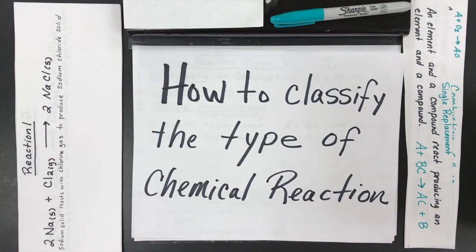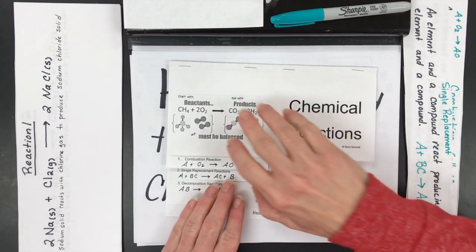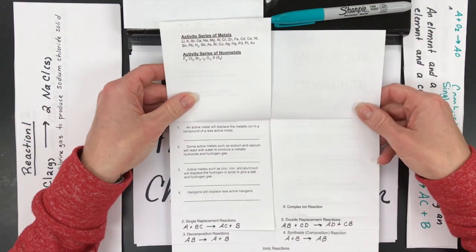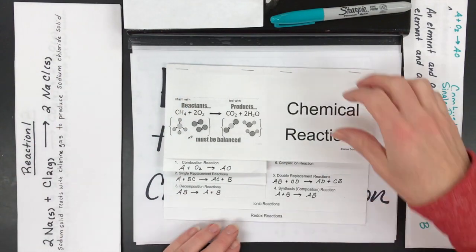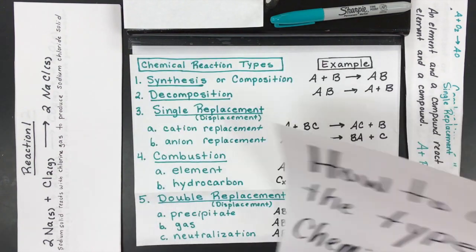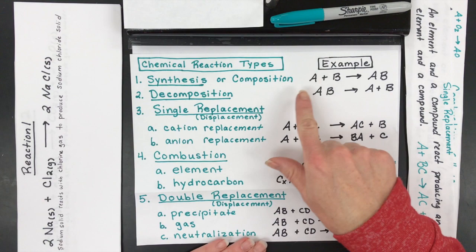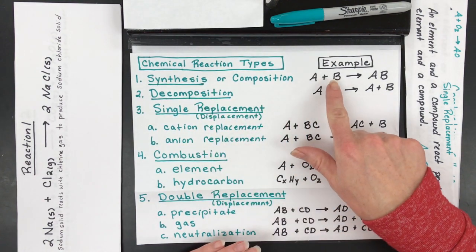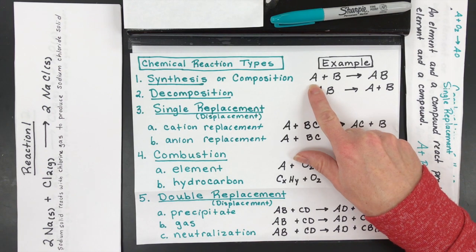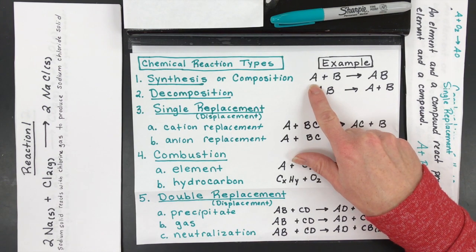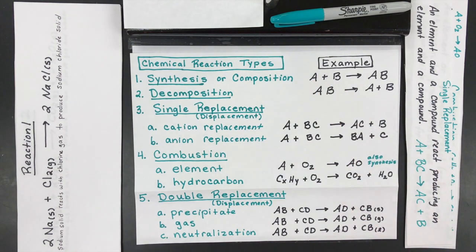The other thing that my students have is they have a foldable that looks like this that has all the reaction types on the front and very detailed examples on the inside. So hopefully you have something like this that your teacher's given you, or maybe they might have a list with notes they gave you in class about how each type of reaction can be given as an example, but they won't use elements or compounds. A lot of times your teacher or a textbook will just say A and B as some kind of element or compound.